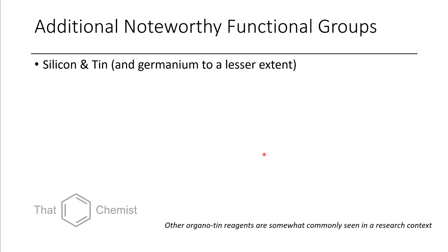So there are a couple other elements commonly encountered in organic synthesis that I had glossed over. Silicon and tin, both elements beneath carbon, are quite prevalent in organic synthesis. Germanium has started seeing a bit of interest recently. Even though it's above tin, you'd think germanium chemistry would be explored more, but it just turns out that hasn't been the case.